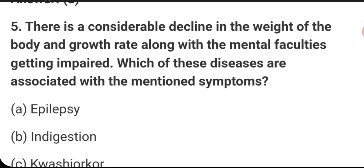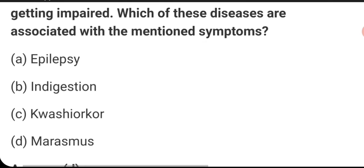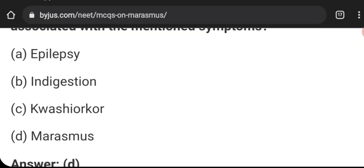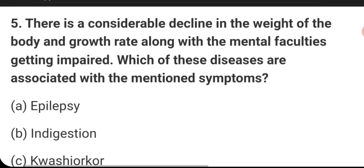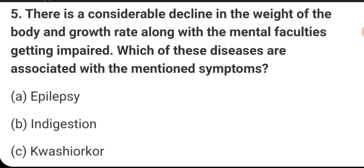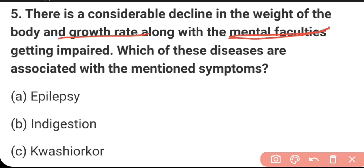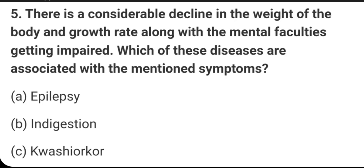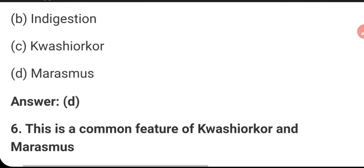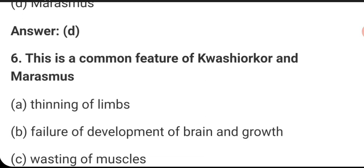A considerable decline in the weight of the body and growth rate, along with mental faculties getting impaired — which disease is associated with these symptoms? The answer is marasmus. In marasmus, mental faculty and growth rate are affected, mental growth is also impaired, and weight is also affected.